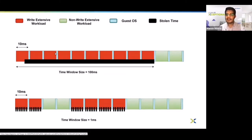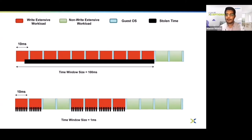In this diagram, red color means a write-intensive workload is running, green is for non-write-intensive workload, and black is time stolen from the guest by stunning a vCPU. Assume the time slice for the guest scheduler is 10 milliseconds: a workload runs for 10 ms, then the guest OS takes a scheduling decision, then again some workload runs for 10 ms, and so on. We control dirty rate in small time windows, and if in any window the dirty quota for that window is exhausted, we stun the vCPU for the remaining time in that window.